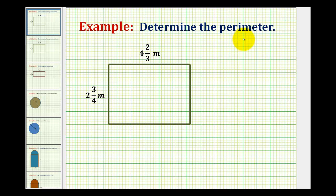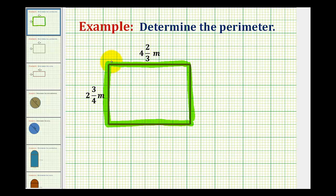We want to determine the perimeter of this rectangle. The perimeter of any shape is the distance around the shape, which we see here highlighted in green. Even though there are formulas to determine the perimeter of various polygons, as long as we know what the perimeter is, we can just add the lengths of all the sides to determine it.